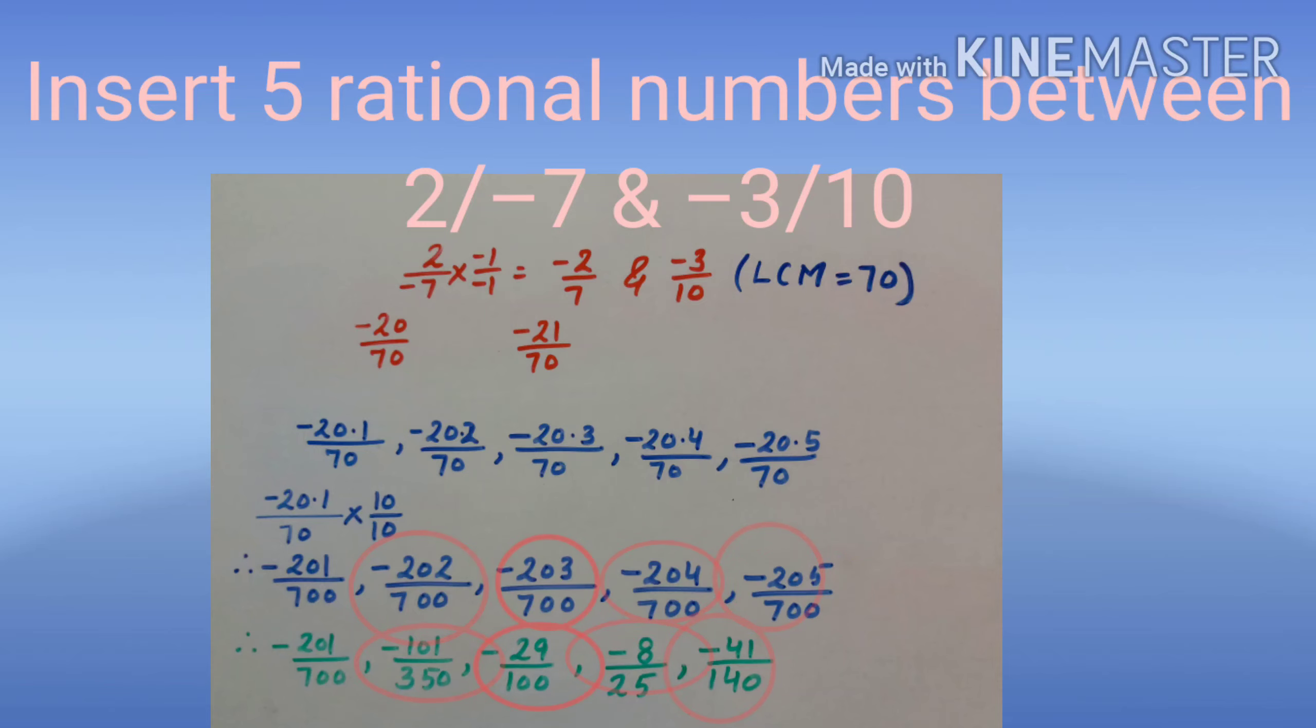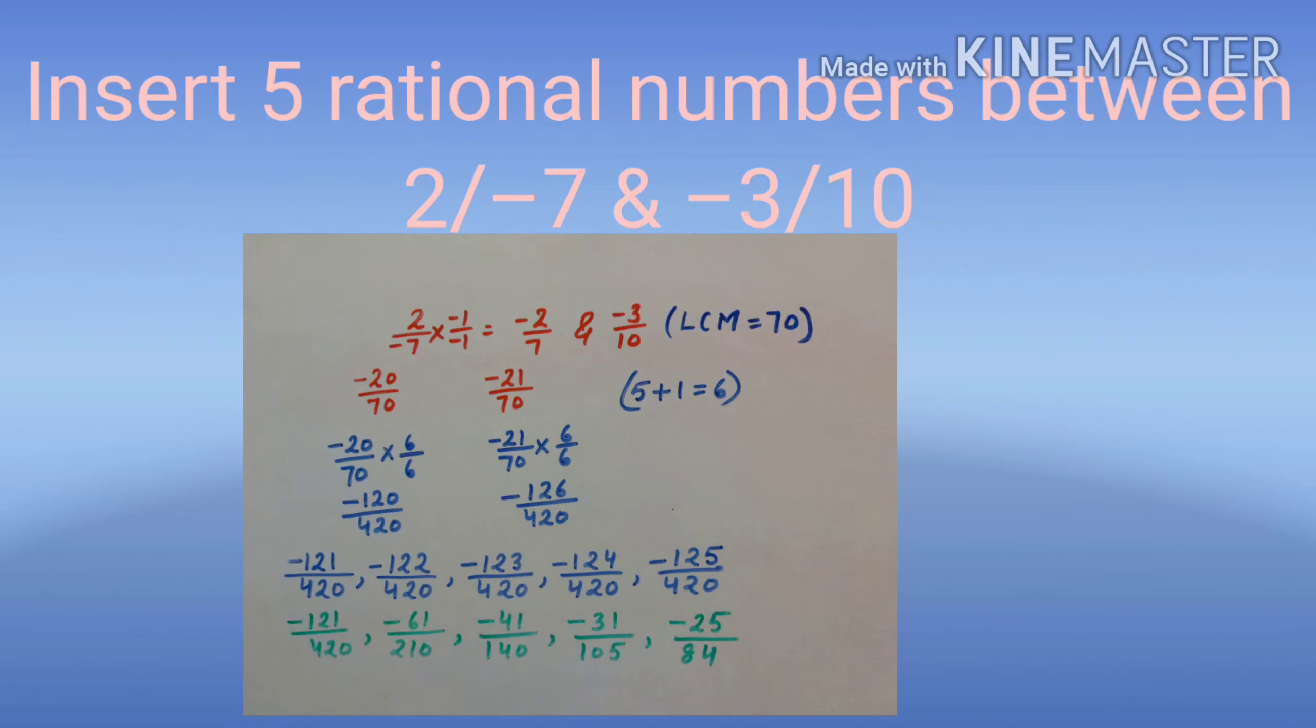For second method, we will see how many integers can we insert between the numerators of equivalent rational numbers. In this example, between minus 20 and minus 21, we cannot insert any integer. So, multiply the rational number with same denominator by successor of required number.